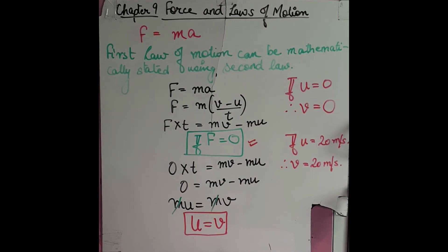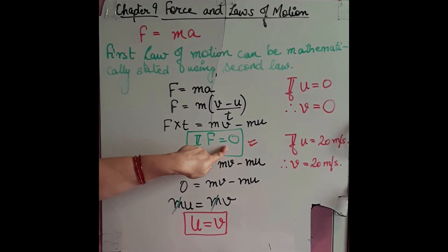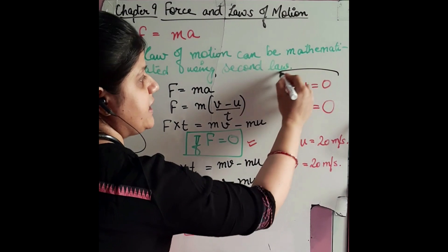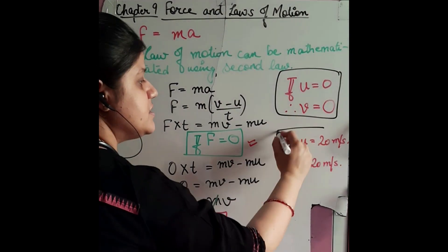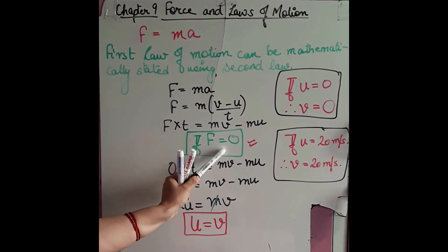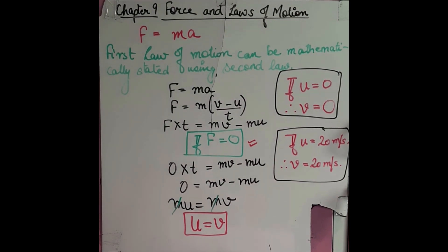That means the object is in uniform motion. When? When the external force is 0. So this is the first law. The first law states that an object will maintain its state of rest or state of uniform motion in a straight line unless an external force is applied on it. When no external force is applied, an object will not change its state of rest or state of uniform motion. Hence, first law is satisfied.